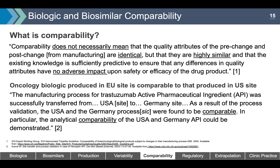This explains why biologics and biosimilars can only be comparable, not identical. The general principle of comparability is that quality attributes of the pre-change and post-change manufacturing are not necessarily identical, but are highly similar — and that existing knowledge is sufficiently predictive to ensure any differences have no adverse impact on safety or efficacy. An example from the literature: when the manufacturing process for trastuzumab active pharmaceutical ingredient was transferred from a USA site to a Germany site, the USA and Germany processes were found to be comparable, demonstrating that even within the originator company, products from different facilities are only deemed comparable, not identical.